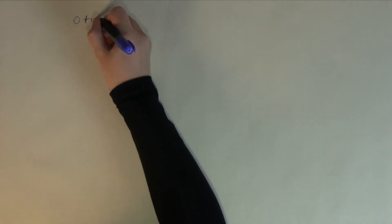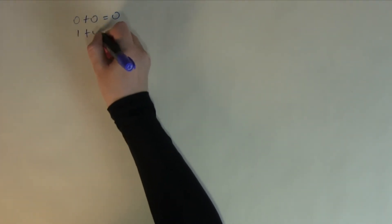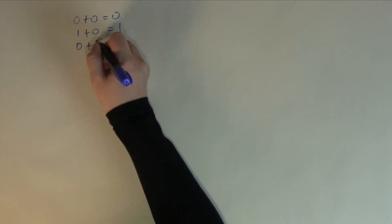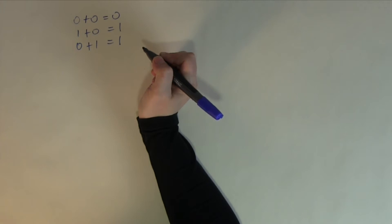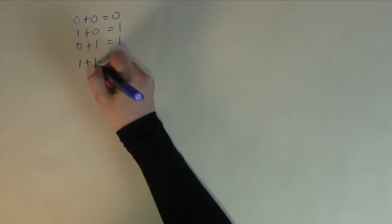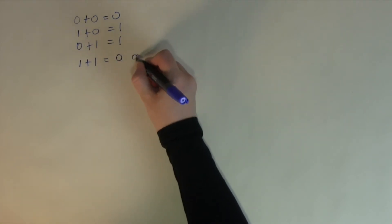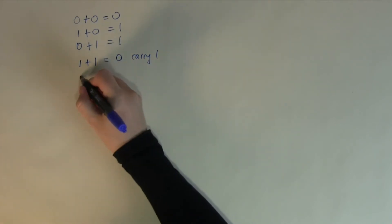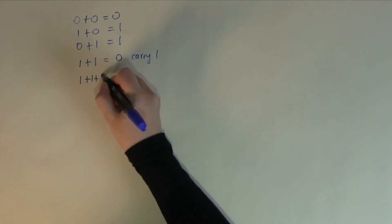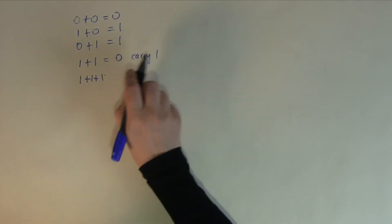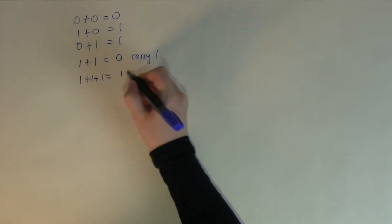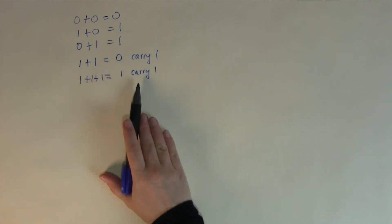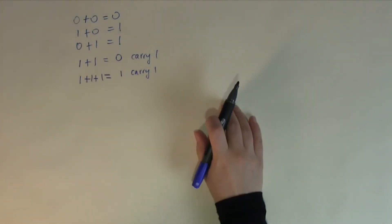Here I'll quickly go through the binary addition rules. 0 + 0 = 0. 1 + 0 = 1. 0 + 1 = 1 — so far, just like in decimal. However, when you add 1 and 1 together, you write down 0 and carry 1. And when you add 1 + 1 + 1 — three 1s, which can happen when you have a carry from the previous column — the result is 1 and carry 1. These rules are explained in detail in the addition video, so check it out if you don't remember.